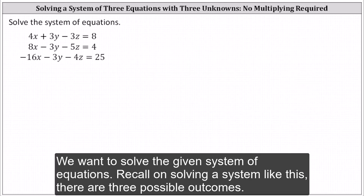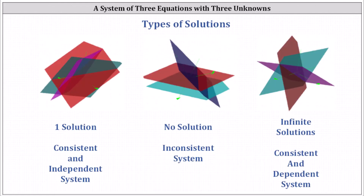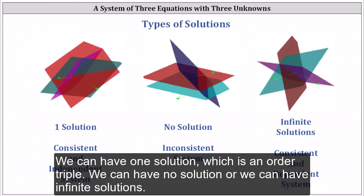We want to solve the given system of equations. Recall, when solving a system like this, there are three possible outcomes. We can have one solution, which is an ordered triple, we can have no solution, or we can have infinite solutions.